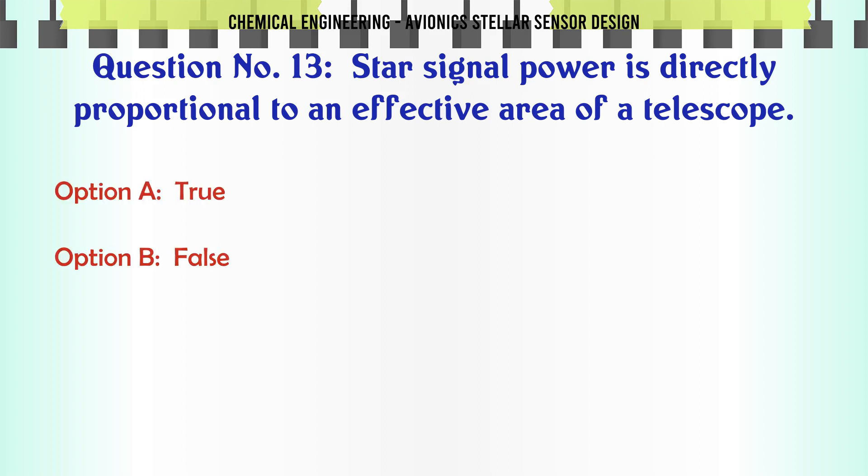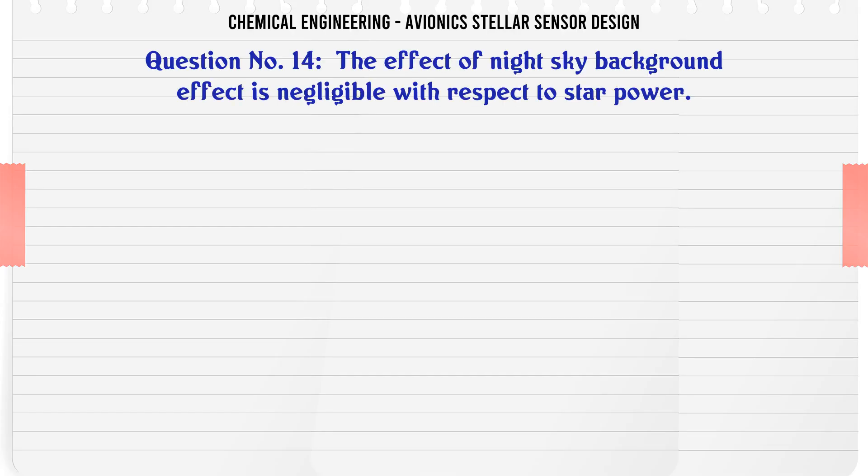Star signal power is directly proportional to an effective area of a telescope. A. True, B. False. The correct answer is True.